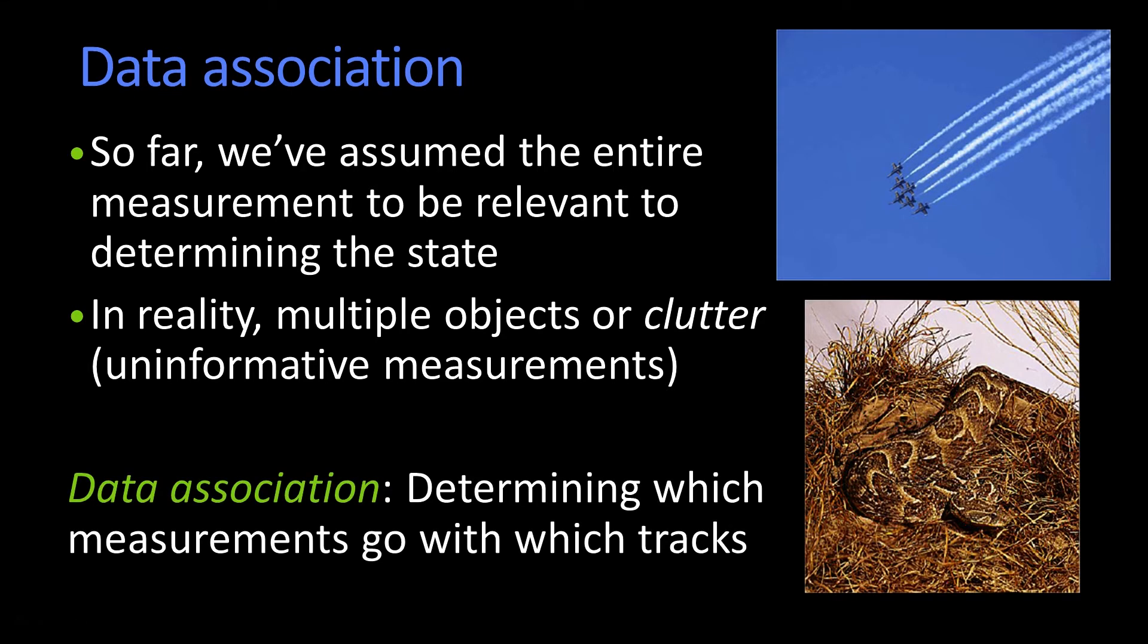The problem is referred to as the data association problem. And the trick is to determine which measurements go with which tracks, and which measurements should be ignored, which measurements cause you to start a new track. These are all things that you have to do when you do tracking.